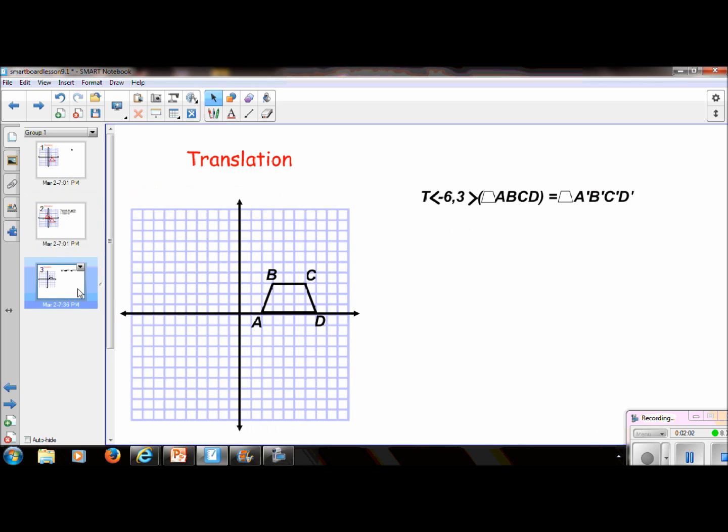Let's just look at one more. Instead of writing down the rule, I'm going to give it to you in the notation. I'm going to translate this trapezoid ABCD and every X coordinate, I'm going to move to the left 6. And every Y coordinate, I'm going to move up 3. So this whole thing is going to shift to the left 6 and up 3. And my new trapezoid would be right here.